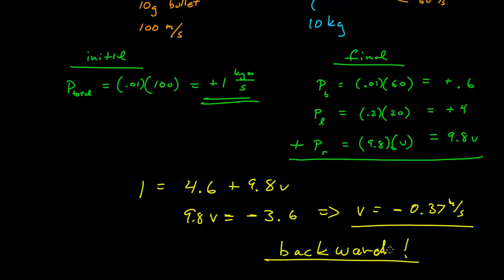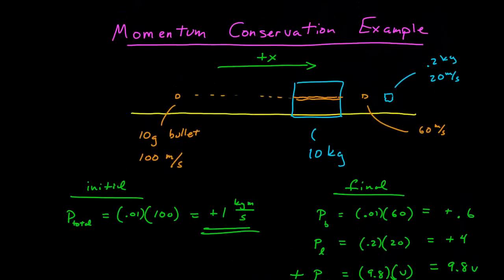Which is kind of counterintuitive, isn't it? So the bullet is going in the positive x direction, and that's the only thing interacting with the block, but after it takes out some of the block with it, that sends the remaining part of the block in the opposite direction.